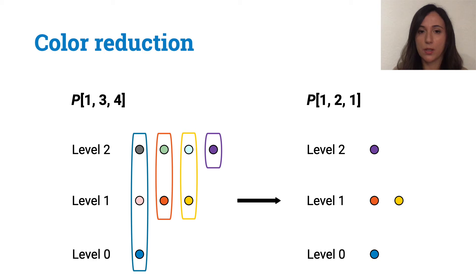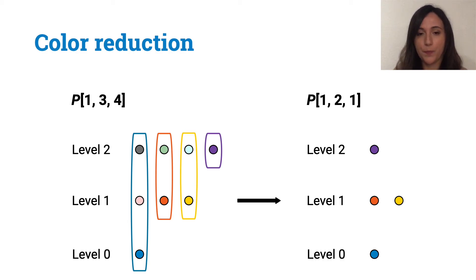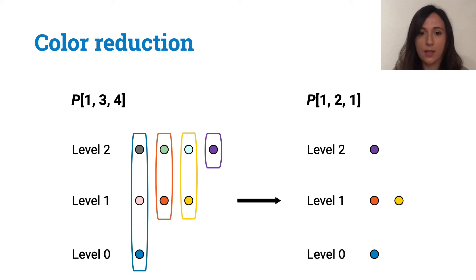Each surviving color in the new problem has the same level as before. The idea behind this color reduction is that each node that in p_{1,3,4} outputs a pointer will still output a pointer in p_{1,2,1}. On the other hand, if a node outputs a color, it looks at its one-hop neighborhood. If it does not have a neighbor with a color of the same group and a lower level, it changes color and picks the lowest level color of the same group. Otherwise, if there is a neighbor with a lower level color of the same group, it becomes a pointer node and points to this neighbor. Nodes with level i either change color and lower their level, or they become pointer nodes keeping the level they had, so levels do not increase.